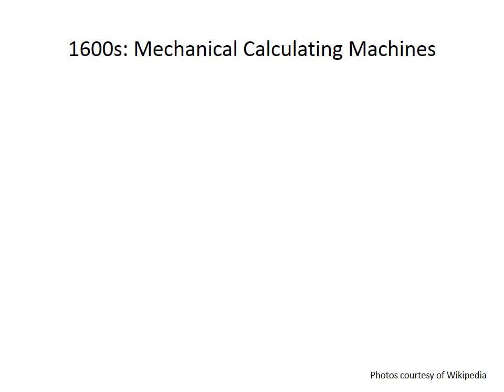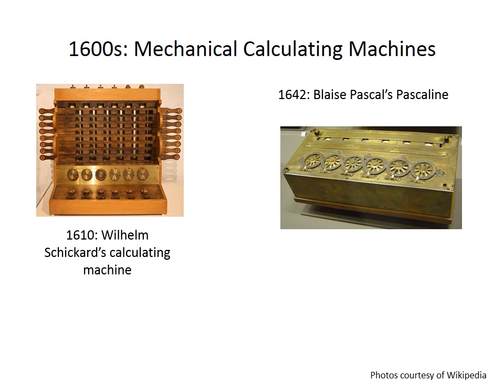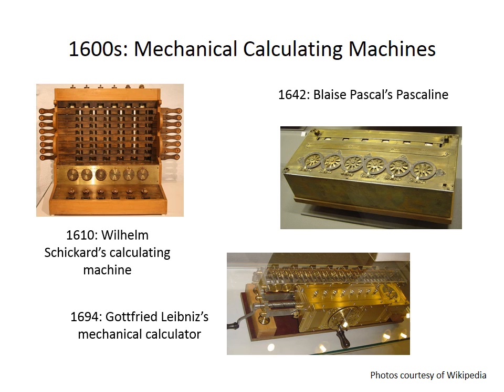Let's now jump ahead to the 1600s and examine some mechanical calculating machines. In 1610, the German Schickard invented a calculating machine that could add and subtract six-digit numbers. A few years later, Blaise Pascal, at the age of 19, invented another calculating machine that could also do addition and subtraction. In 1694, the German Gottfried Leibniz invented a mechanical calculator that could not only do addition and subtraction but could also do multiplication and division. These were still quite a ways off from what we would today call a computer.